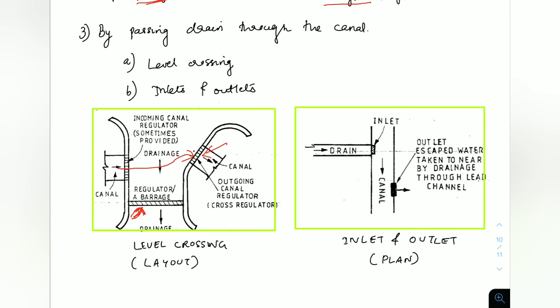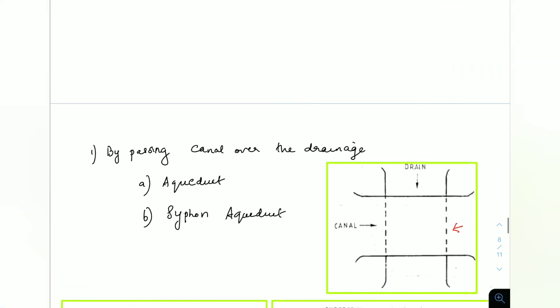Inlets and outlets apply when the drain or river body has very low discharge. In this case, we discharge the drain into the canal. If the canal does not have sufficient capacity to hold that water, we provide an outlet — one outlet may be sufficient depending on the discharge. The full supply level of the canal is kept at or below the bed level of the drainage so that silt and other particles from the drain do not enter the canal — only the water passes through.